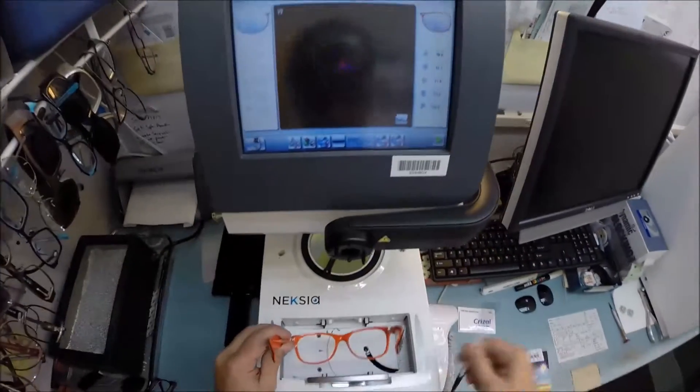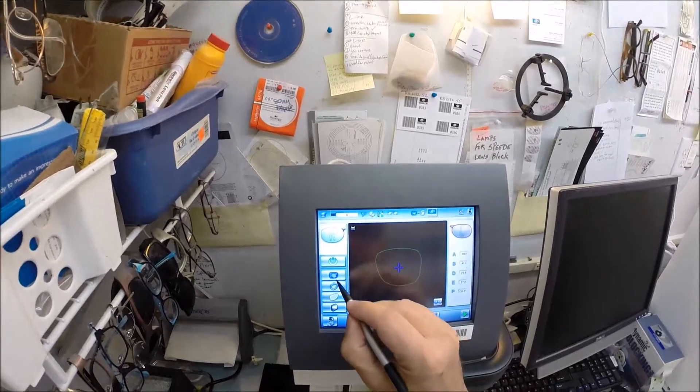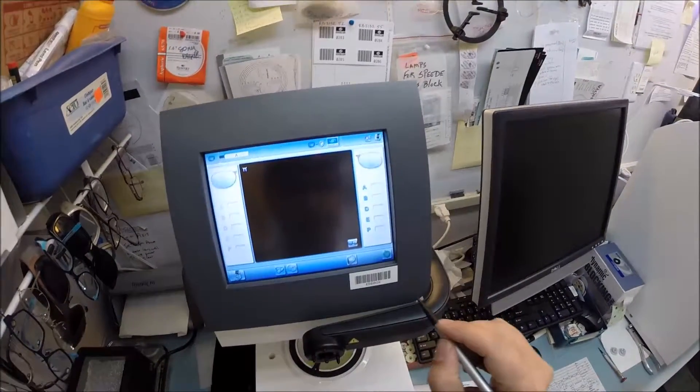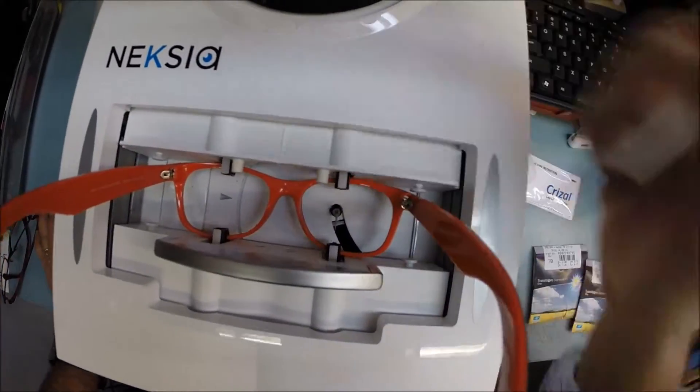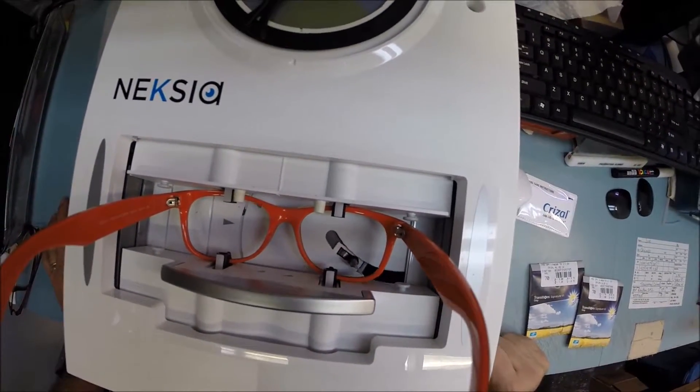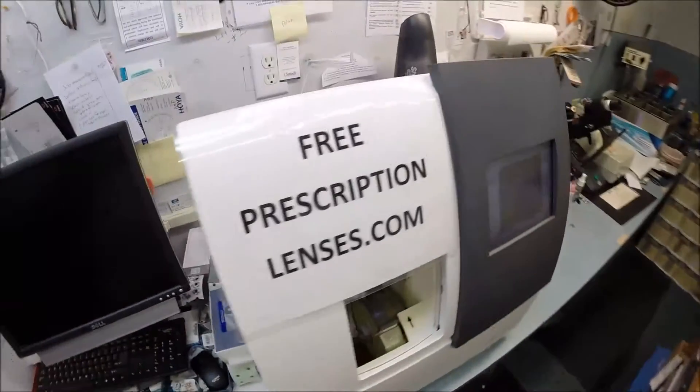Now I'm going to put this size 55 frame into the tracing element of my edger. We're going to hit the trace button. The stylus is going to pop up and trace the shape of the right side of the frame before moving over and tracing the left.